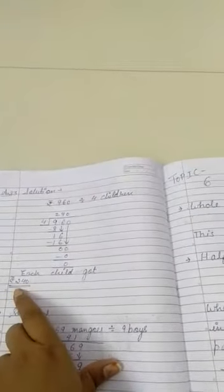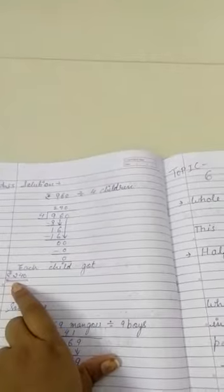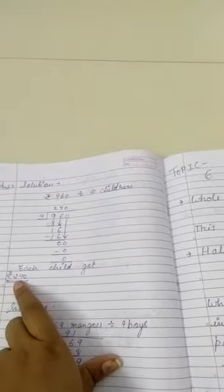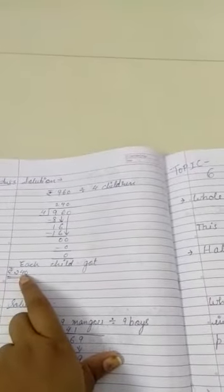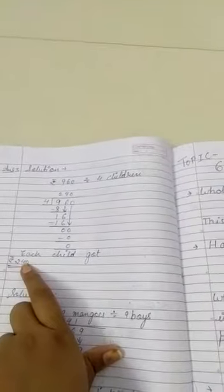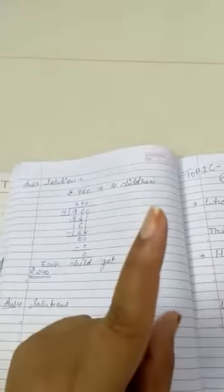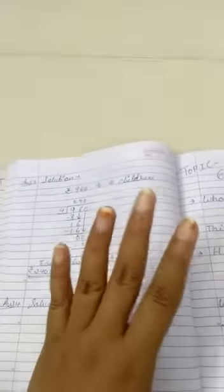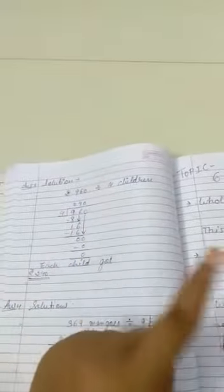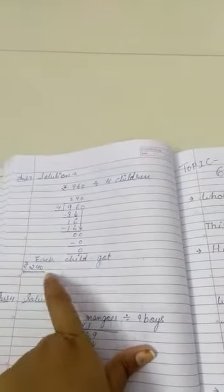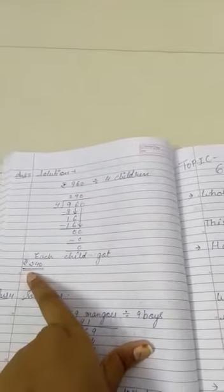So our remainder is 0. What is the quotient? 240. So each child got rupees 240. Every child got 240 rupees.